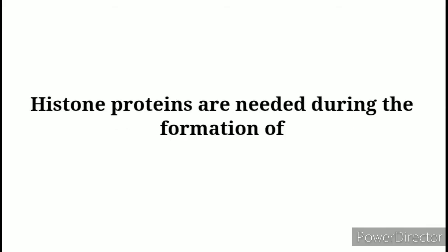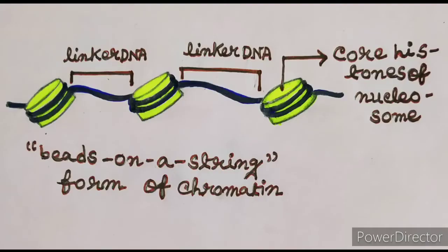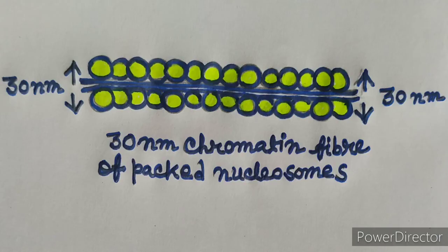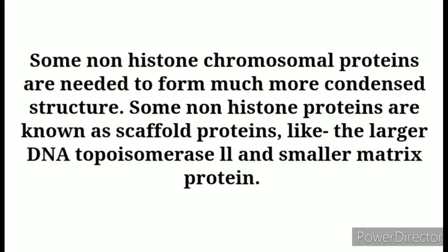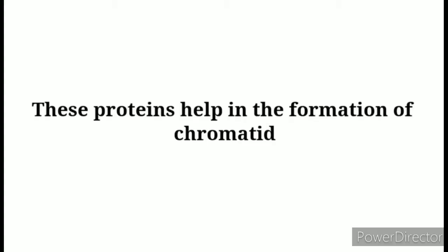One important thing to remember: histone proteins are needed during the formation of the beads-on-a-string structure of chromatin and during the formation of the solenoid structure. After that, some non-histone chromosomal proteins are needed to form more condensed structures. These are known as scaffold proteins, like the larger DNA topoisomerase 2 and the smaller matrix proteins, and they help in the formation of the chromatid.